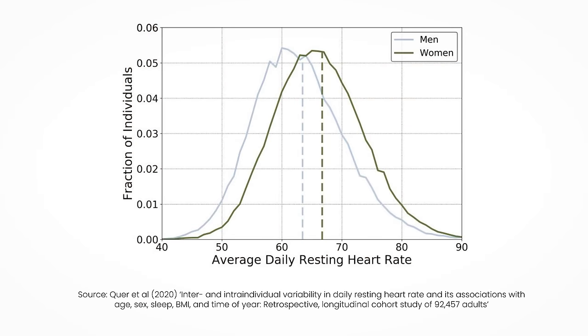Let's take resting heart rate again. A resting heart rate of 60 to 100 is considered normal because that's where the majority of people's resting heart rate falls into. This 2020 study on over 92,000 people illustrated it perfectly. As you can see in the graph, the vast majority of people have a resting heart rate of 60 to 70, and only a fraction of the population has a resting heart rate below 50, which is the lowest risk group.